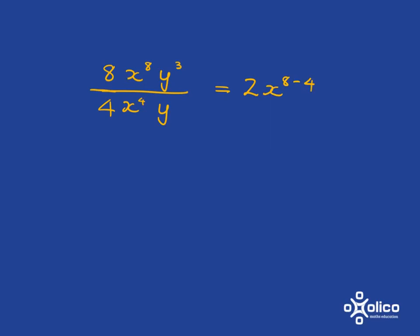Then you're going to move on to your y's. With your y's, you've got y cubed over y. Remember that this y just means y to the power of 1. You're going to use your rule again, which is going to be y to the 3 minus 1. And you'll get your answer 2x to the 4y squared.